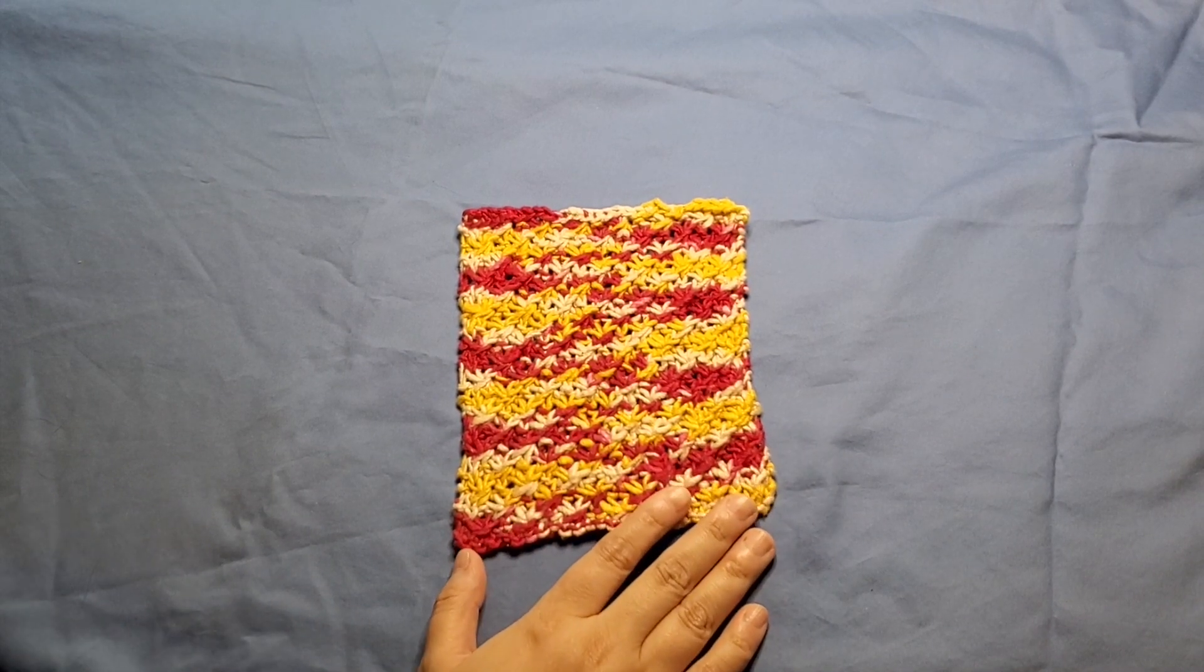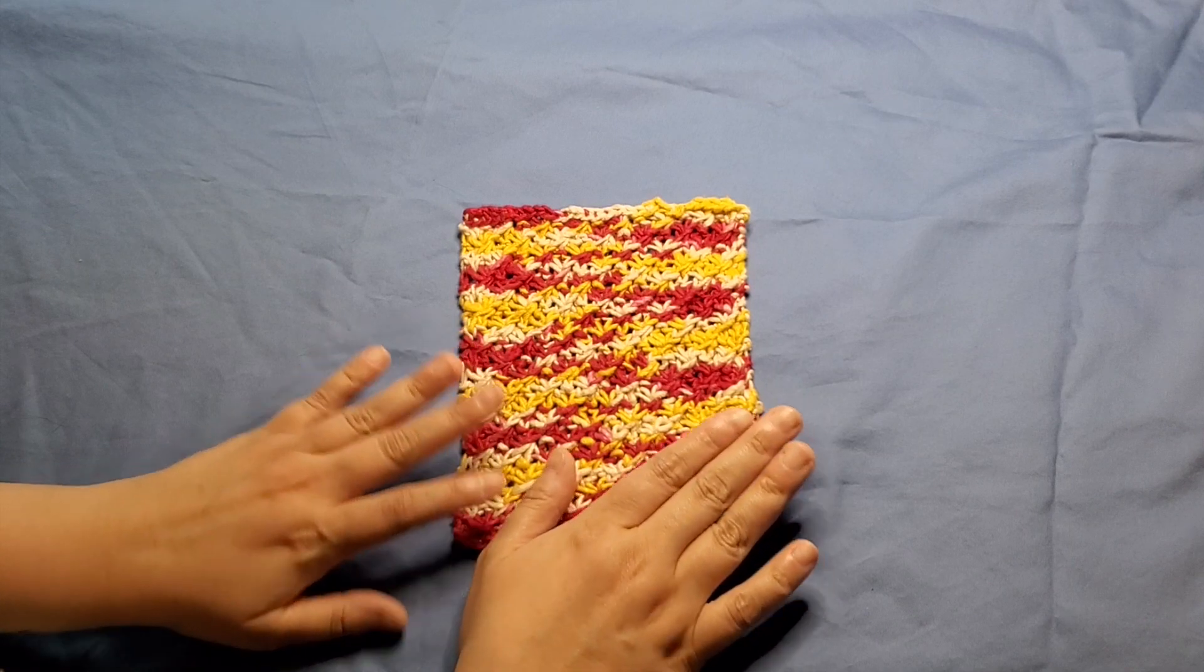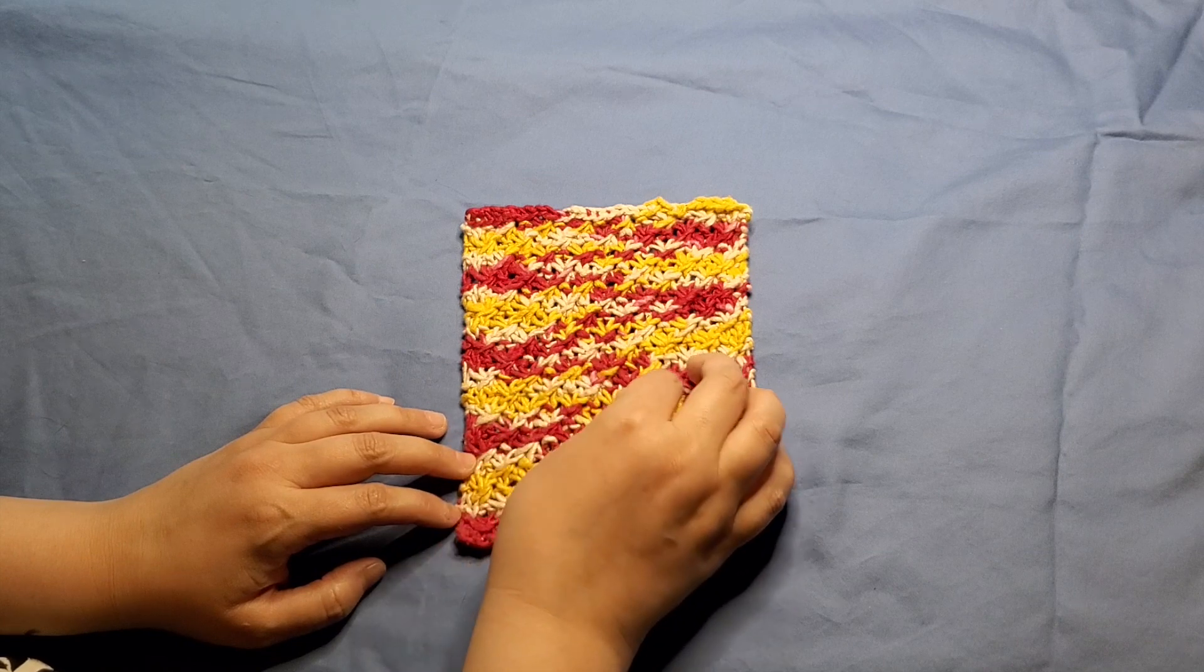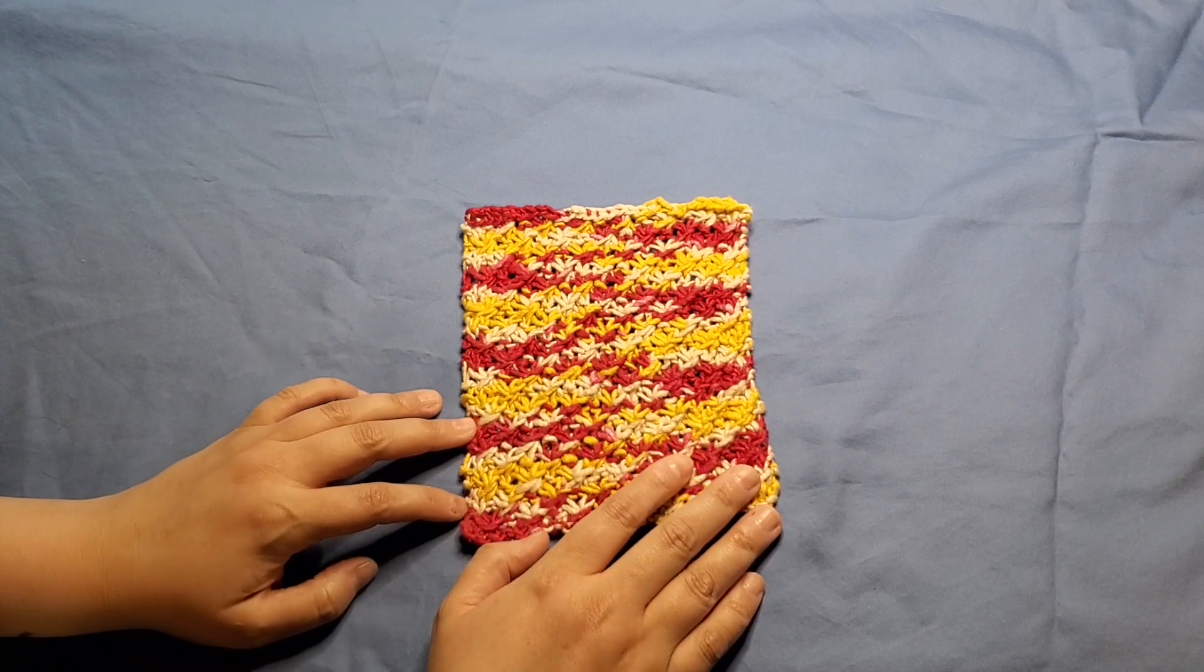The next stitch we're working on is called Daisy Stitch. It's a pretty simple stitch, actually. You can kind of see how the stitches come together in clumps that almost look like daisies, which is where it gets its name, obviously.